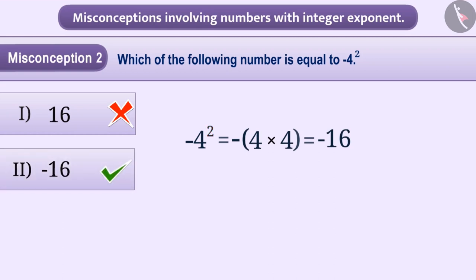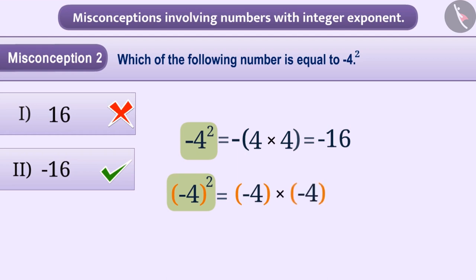It is important to note that if minus 4 to the power 2 were written with brackets, it would have been written as minus 4 into minus 4, which would have resulted in 16. So it is important to notice that the exponent given in the question applies to which number.